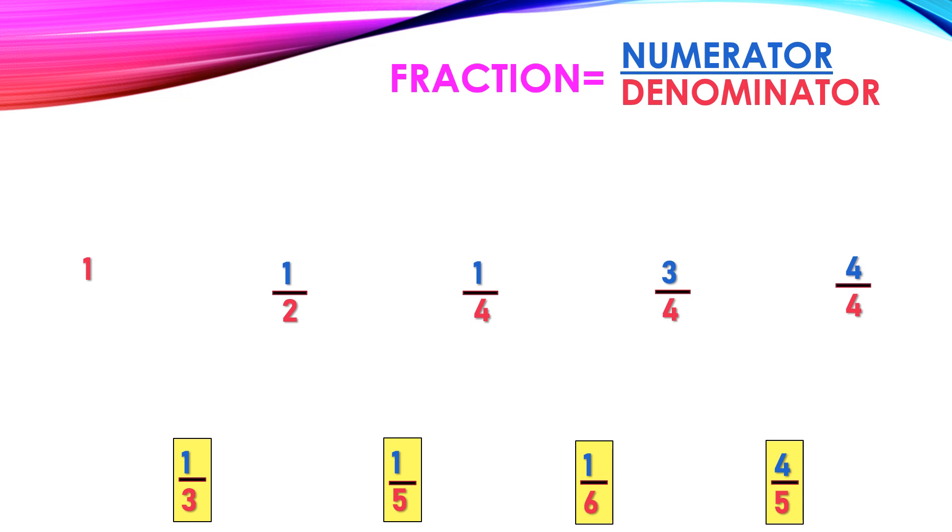Here, fraction is there. What is a fraction? Fraction equals numerator by denominator. That is one full round. So one full round is 1. Clear? This is the center of rotation.